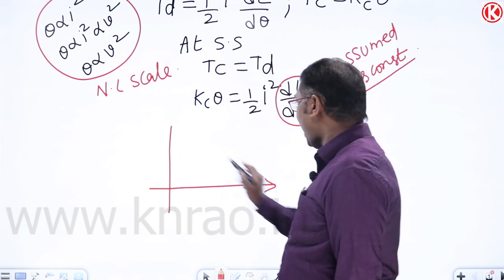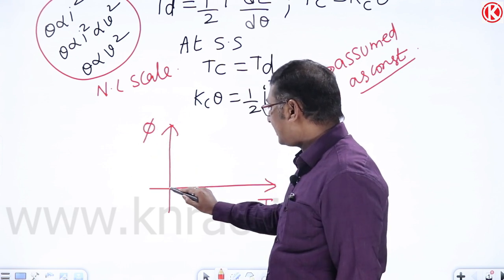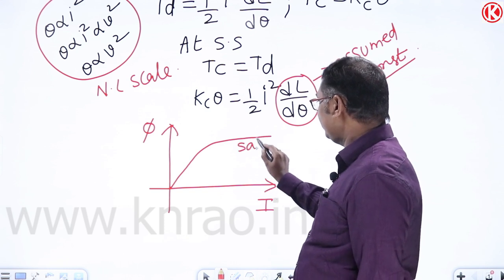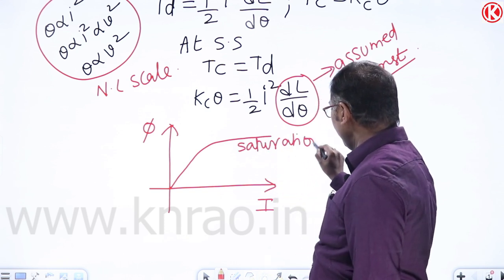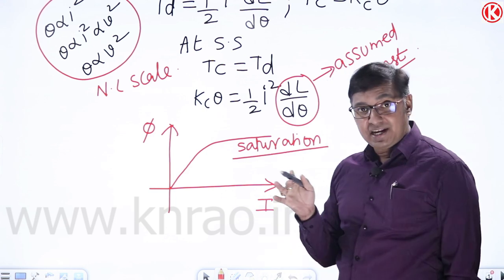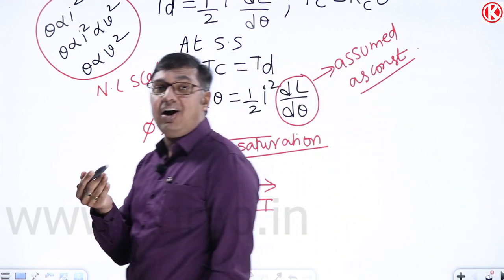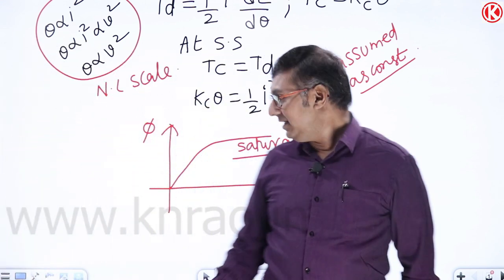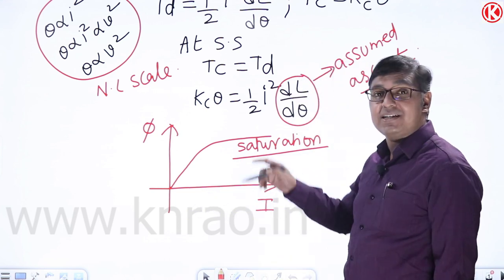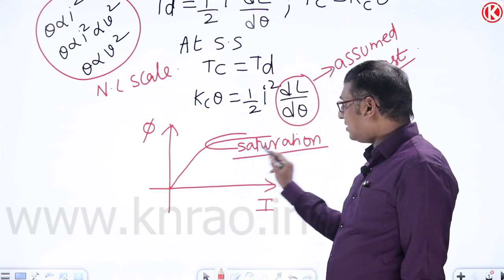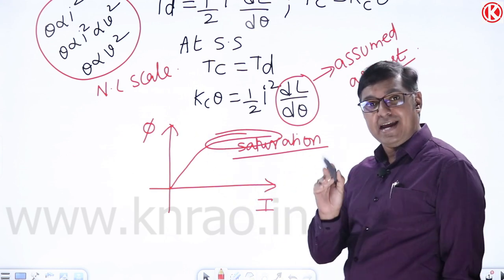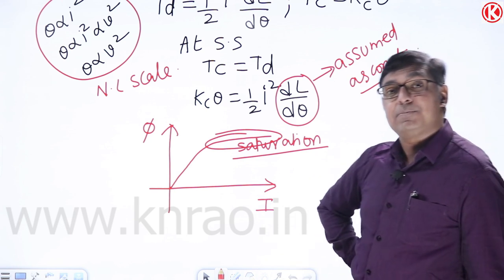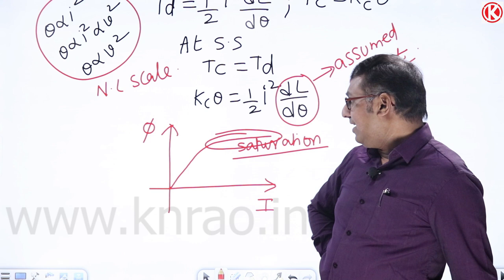As current increases, flux increases until it reaches saturation. Once saturated, increasing current does not increase flux further. This applies to both attraction type and repulsion type MI instruments — the limitation is saturation. In PMMC instruments, the limitation is that the springs are current-carrying conductors.